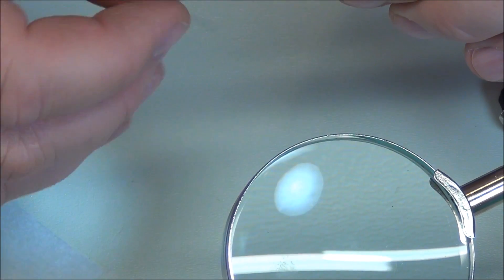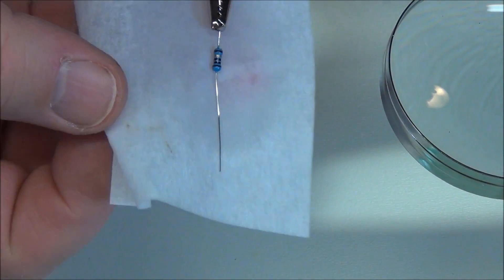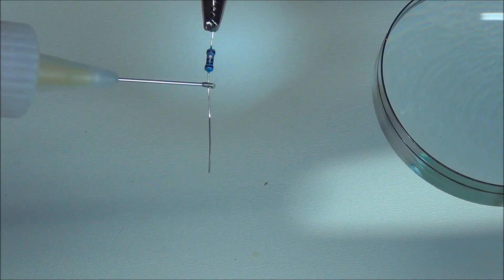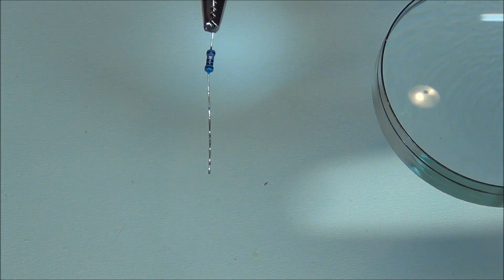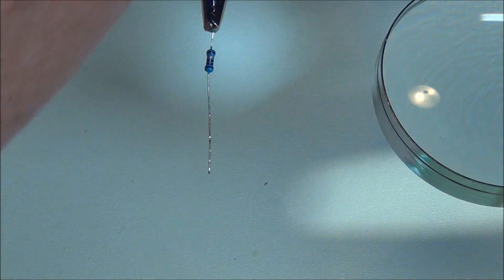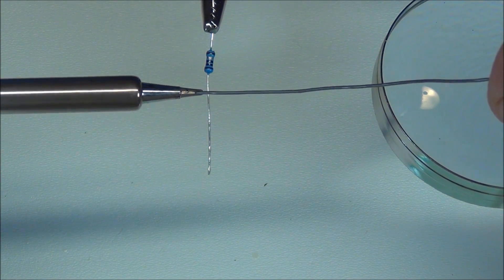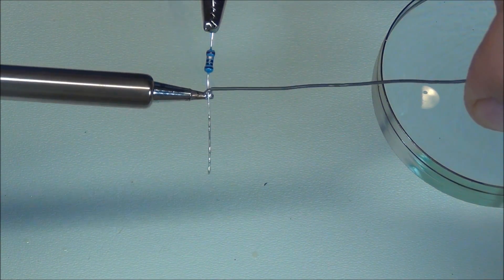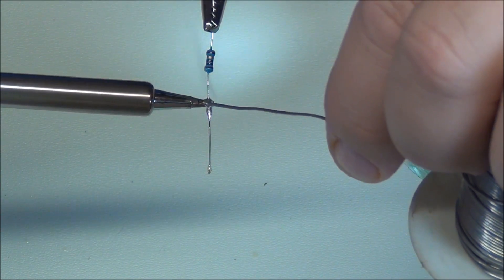Let that cool there for just a second, and then we clean excess rosin off of there. Okay, and we just reverse the lead, do the same thing again here. Now I had my fingers all on it, so I'll just give it a quick wipe, a little flux on here, just going to get it wet. Clean the iron off.